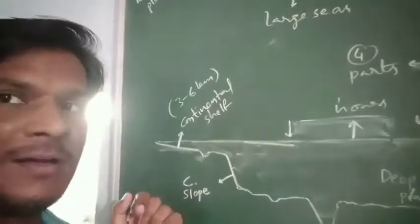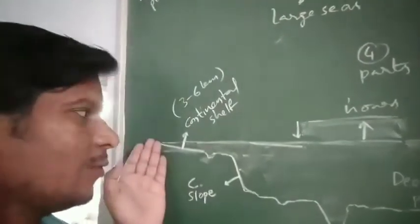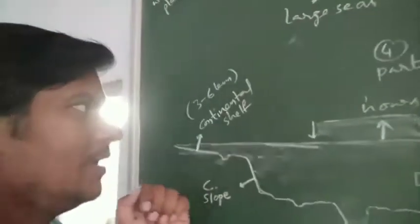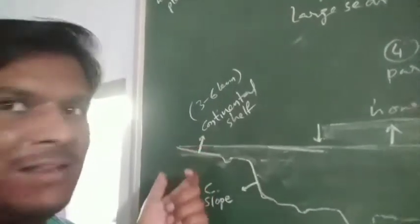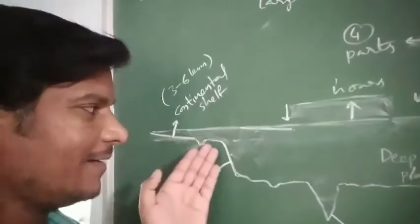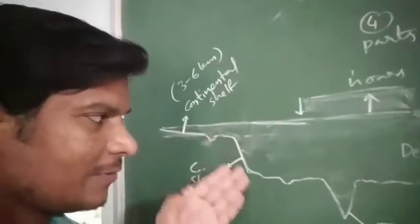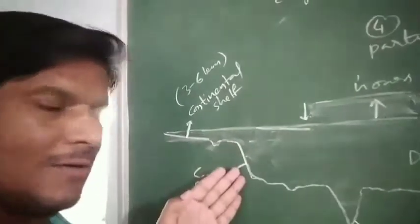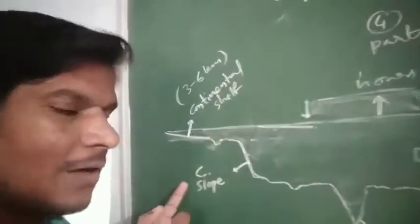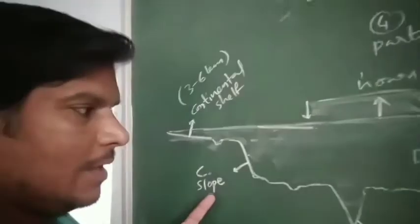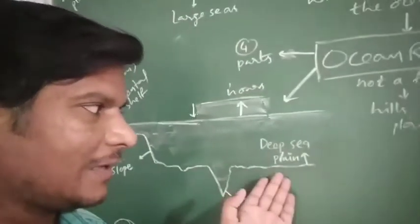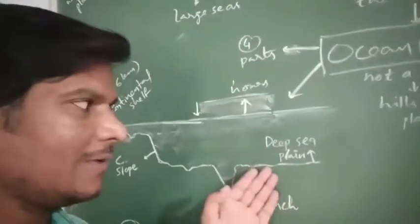From the coastal area, three to six kilometers of land under the ocean is the continental shelf. After the continental shelf, the next area is a slope in the underground of the ocean — that slope is known as the continental slope.